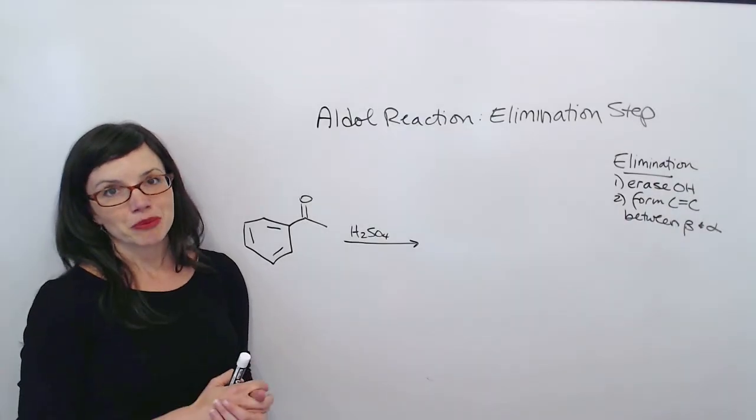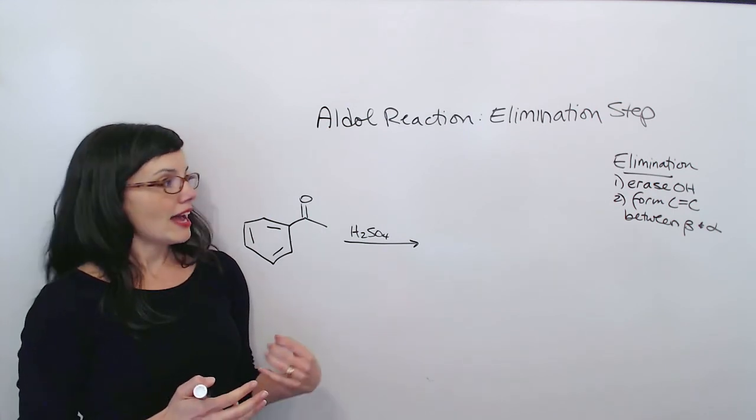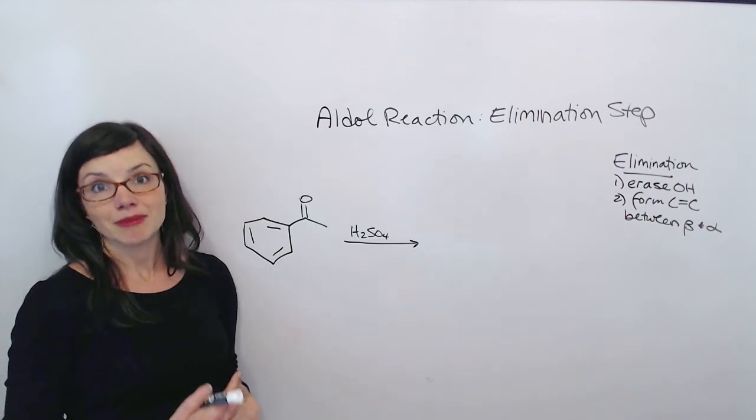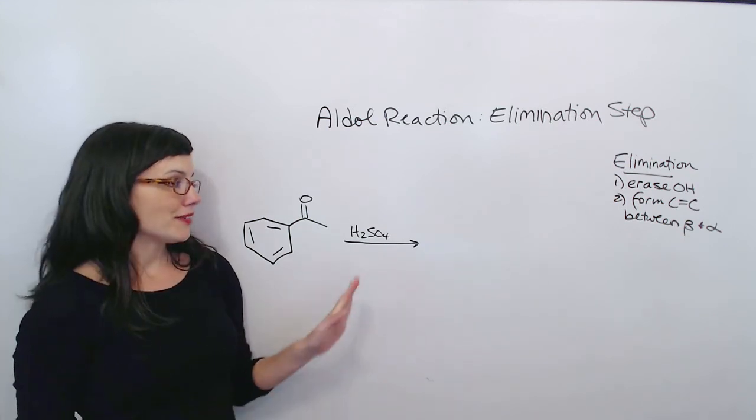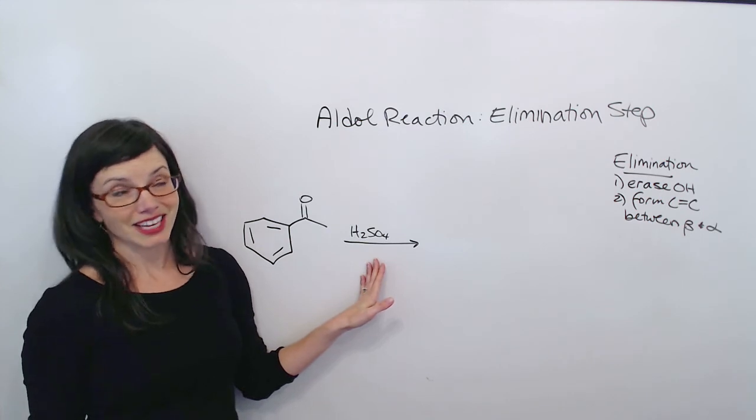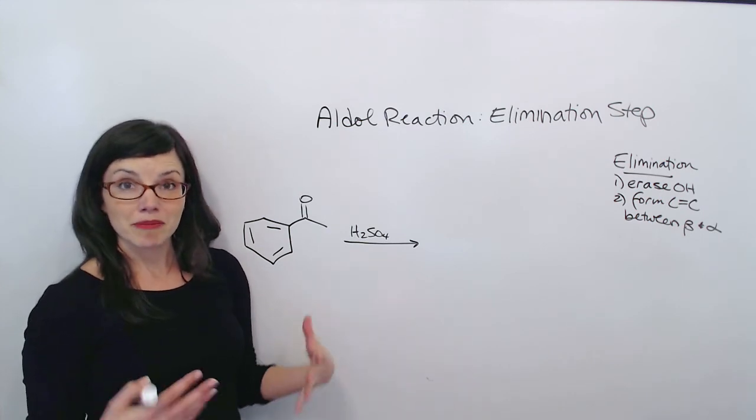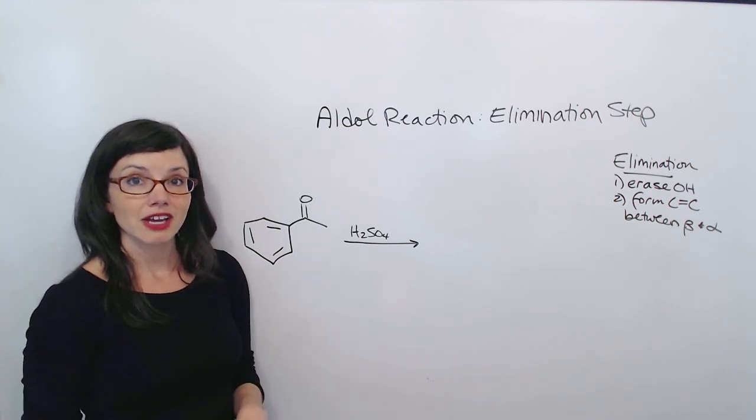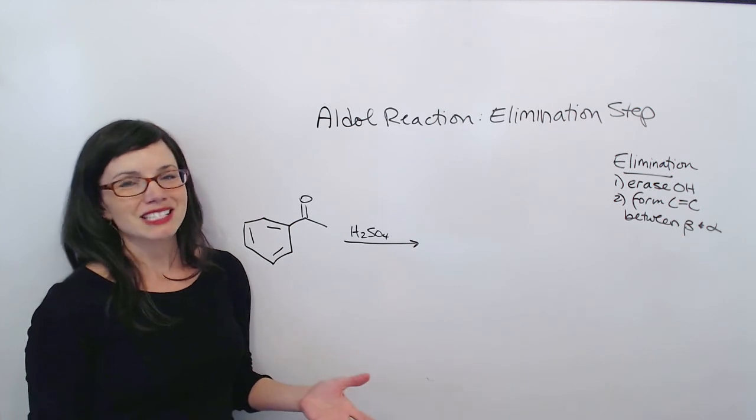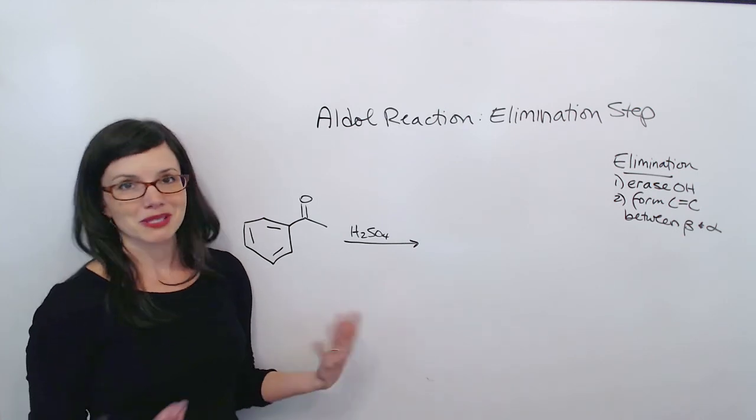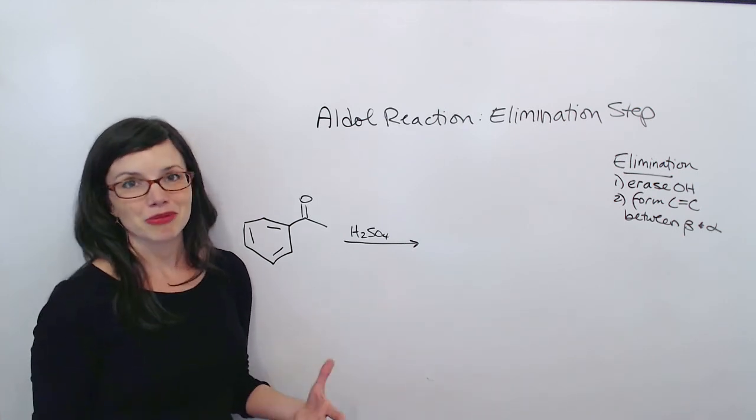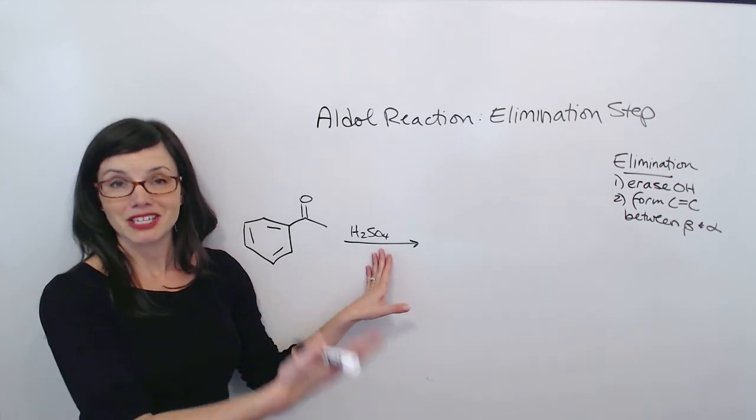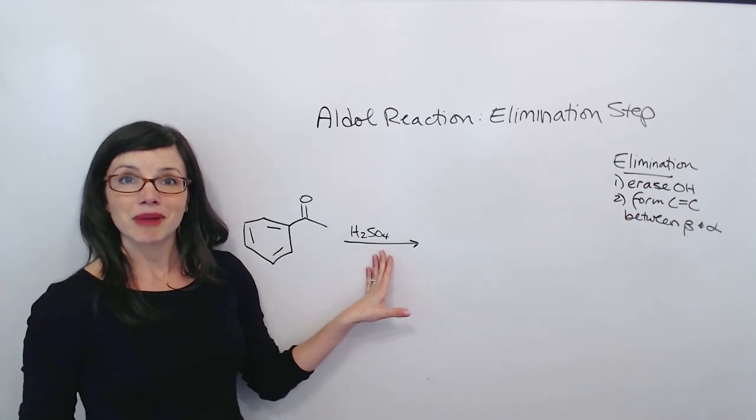Here's a chance for you to practice. Why don't you hit pause and go ahead and predict products both of the addition step and of the elimination step. Now, this reaction is done in acid, and that's a little different, sure. The mechanism is going to be different, and we're going to talk about the mechanism in acid versus base later. But when you're predicting product, the mechanism doesn't really matter. We're just going to use the same silly techniques to predict products no matter whether it's an acid or base. So you're not going to worry about this. You're just going to do the addition product and the elimination product, and then we'll come back and compare.